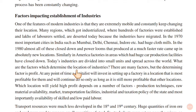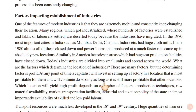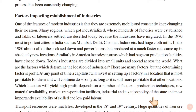In the 1970s, most important cities in India such as Mumbai, Delhi, Chennai, and Indore had huge cloth mills. In the 1980s, almost all of them closed down and power looms that produced at a much faster rate came up in absolutely new locations. Similarly, in America, factories in areas which had huge car production facilities have closed down. Today's industries are divided into small units and spread across the world.